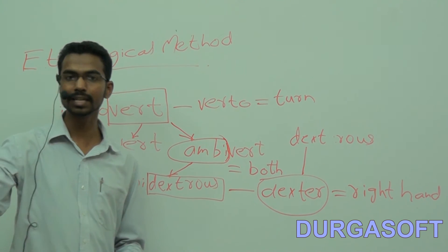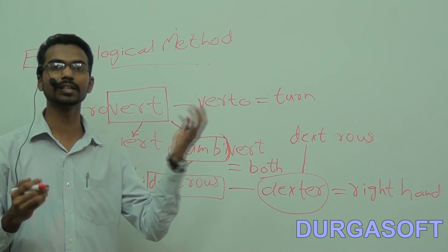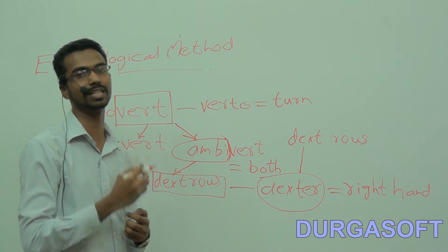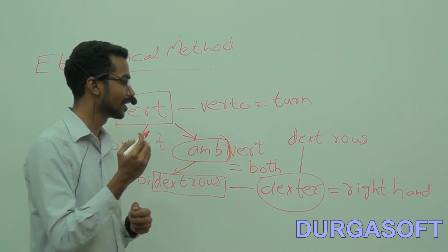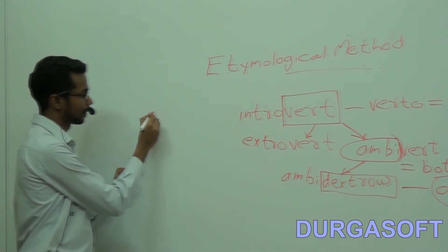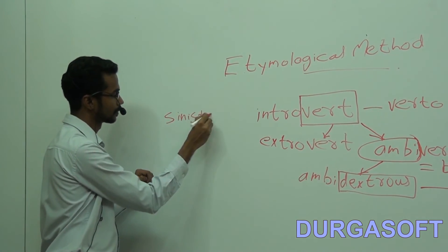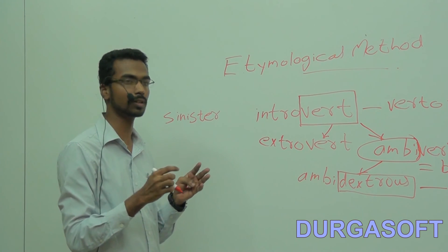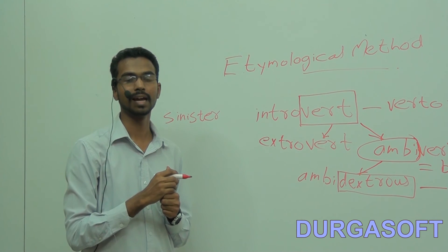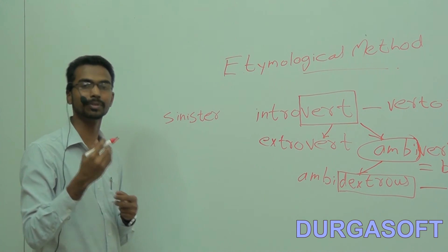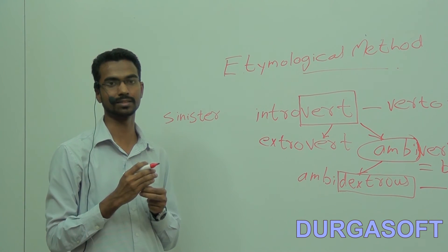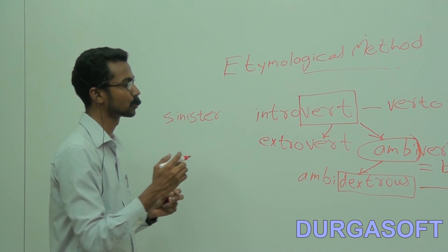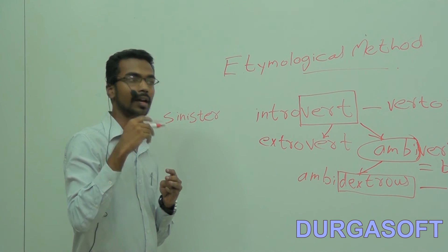In olden days, the right hand always stood for things which are good and the left hand for things which are bad. So if there is a word for right hand, there must be a word for left hand as well. The word for left hand is 'sinister.' This word has been borrowed into English without any modification. Sinister means someone who has a criminal attitude — someone who is nefarious or obnoxious can be referred to as sinister.